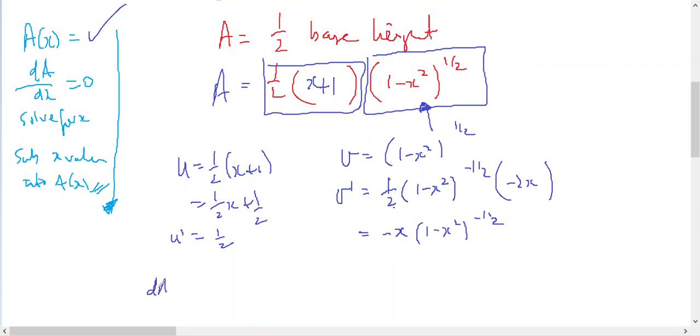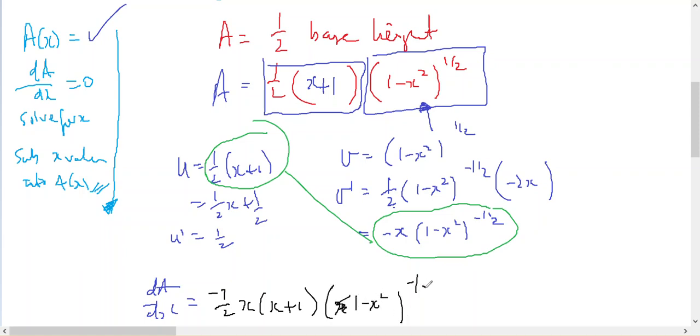So dA dx is going to be u times v dash. So that's going to give me negative a half x times x plus 1 times 1 minus x squared to the negative of a half. So I've got the half, I've got the negative, I've got the x, the x plus 1, plus this times this, which is a half, 1 minus x squared to the positive of a half.